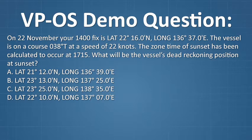On 22 November, your 1400 fix is latitude 22 degrees 16 minutes north, longitude 136 degrees 37 minutes east. The vessel is on a course of 038 degrees true at a speed of 22 knots. The zone time of sunset has been calculated to occur at 1715. What will be the vessel's dead reckoning position at sunset?